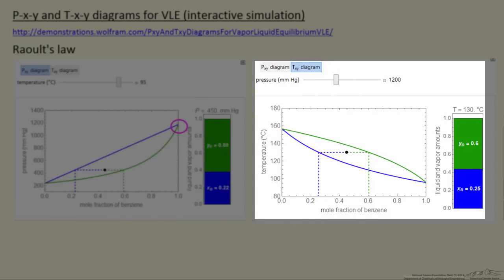On the right side is the temperature versus mole fraction, again for benzene. And now the purple circle represents the saturation temperature of benzene for this pressure of 1200 millimeters of mercury. So the saturation temperature is lower for benzene than for the second component.